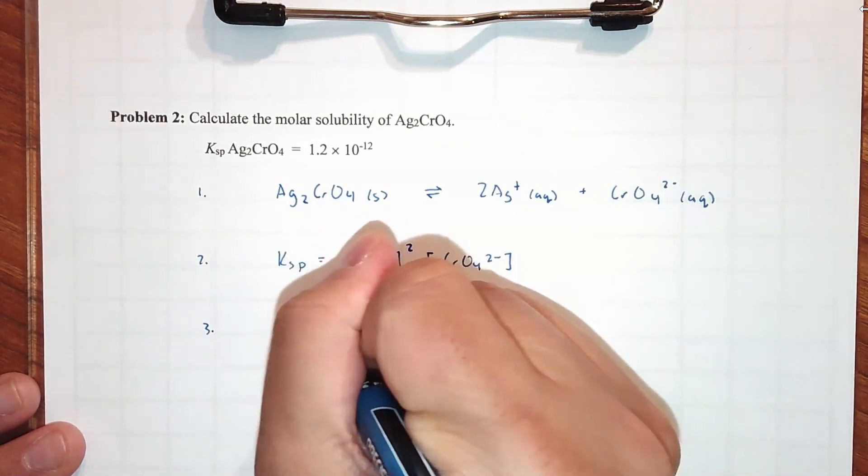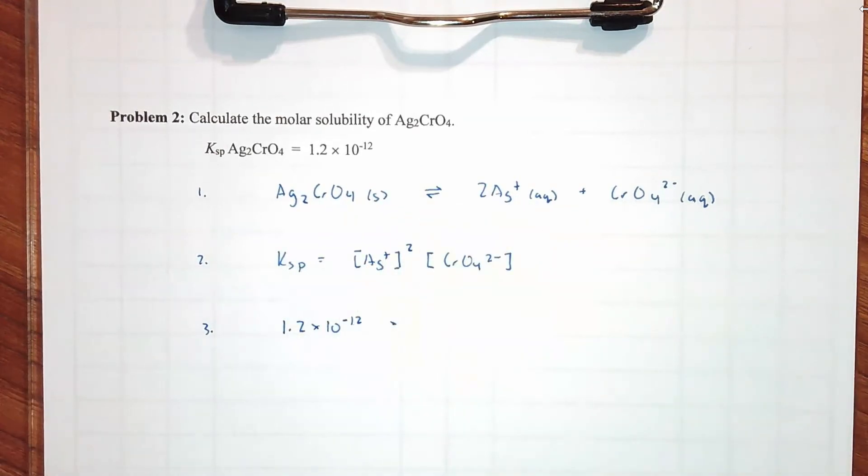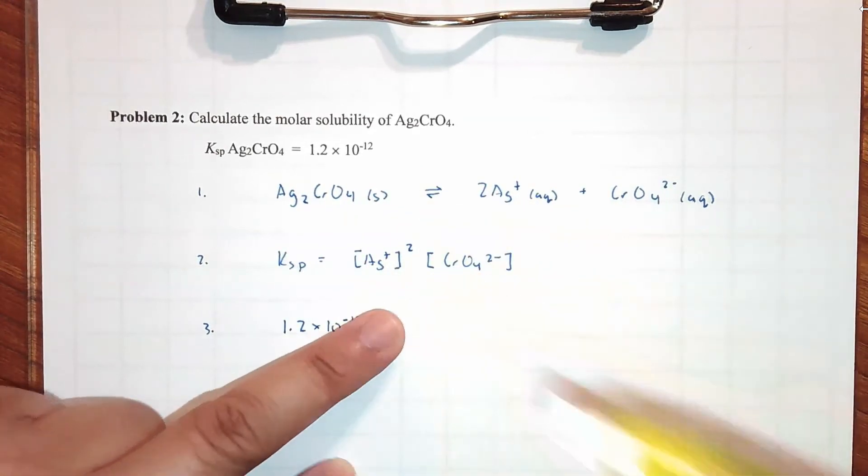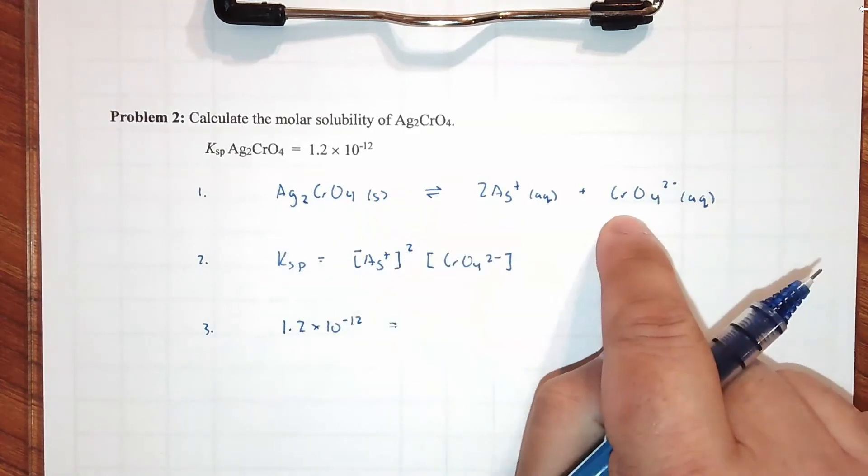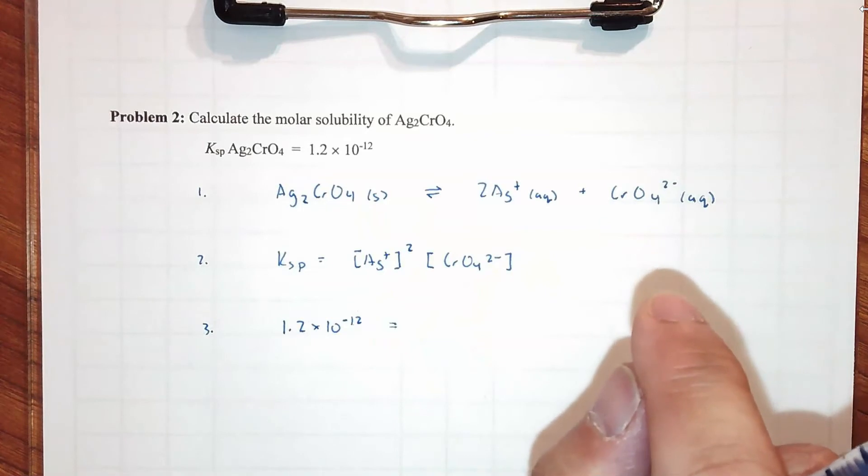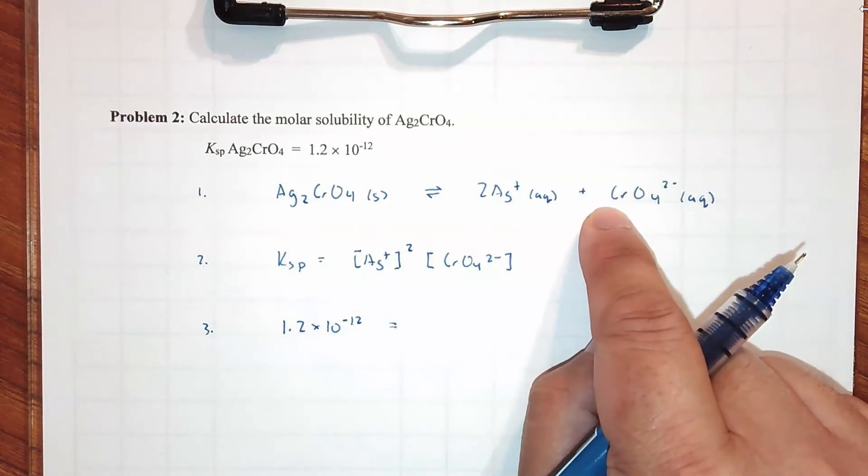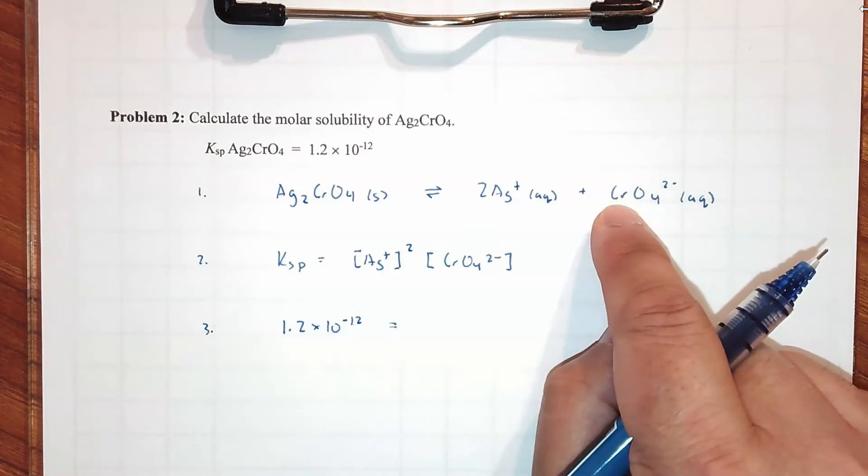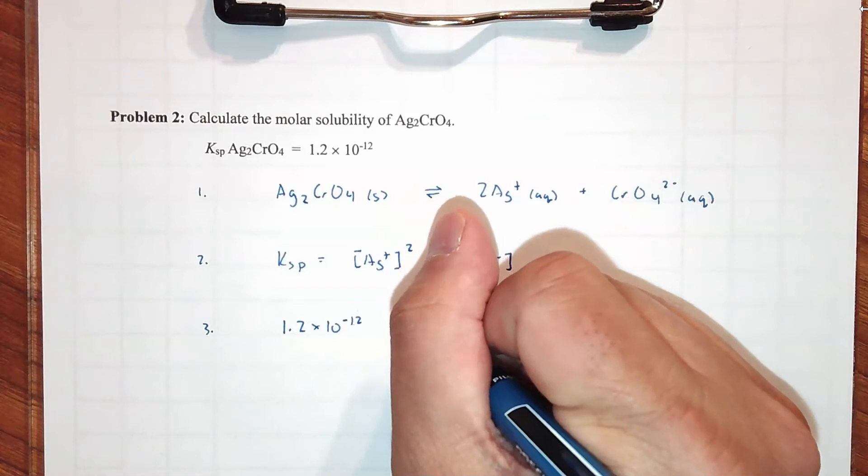I'm just stalling for time. I'm not 100% sure how to deal with S in this case. Let me focus this. Number two, Ksp equals concentration of Ag+ squared times the concentration of CrO4 2- not squared. Number three, substitute for S and substitute for Ksp.